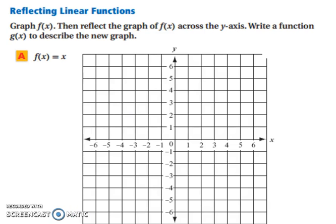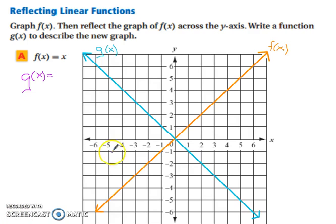So let's look at an example. So graph f(x), then reflect the graph of f(x) across the y-axis. Write a function, g(x), to describe the new graph. So take a moment and draw in the two graphs. All right, so f(x) is our parent function in orange. And g(x) is us reflecting it across the y-axis. Well, the slope, everything is the same, except it's negative. So g(x) would be simply -x.